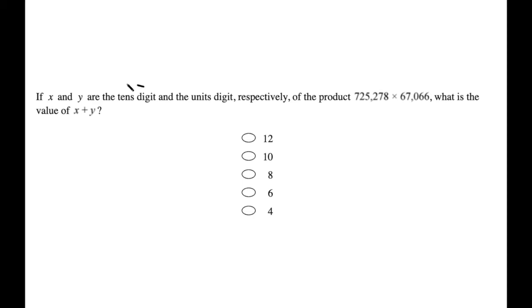First things first, let's define these terms here. What are tens digit and units digit? Well, if I have a number like 523, then the units digit of this number is going to be 3. It's the last digit. And the tens digit is the second to last digit, so 2.